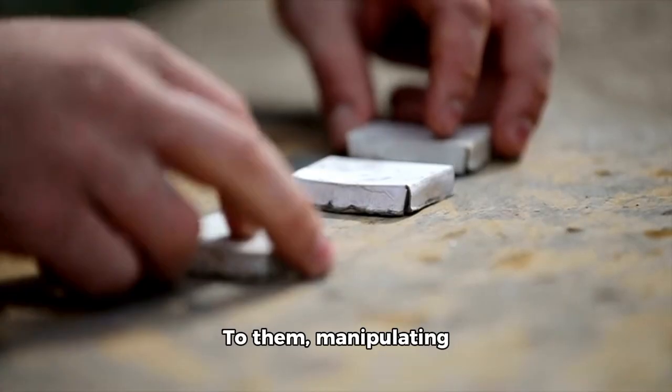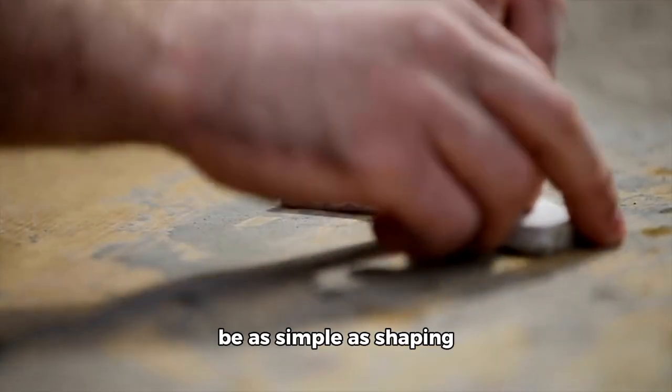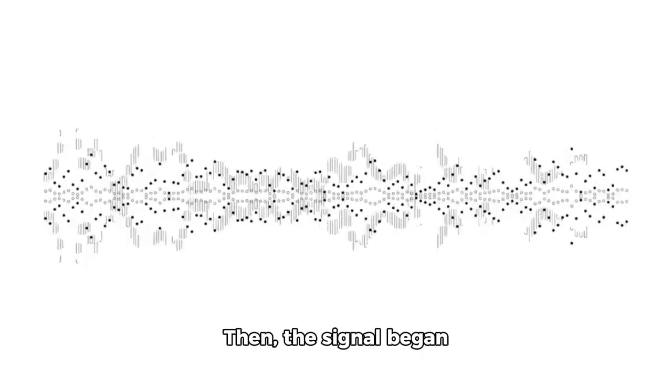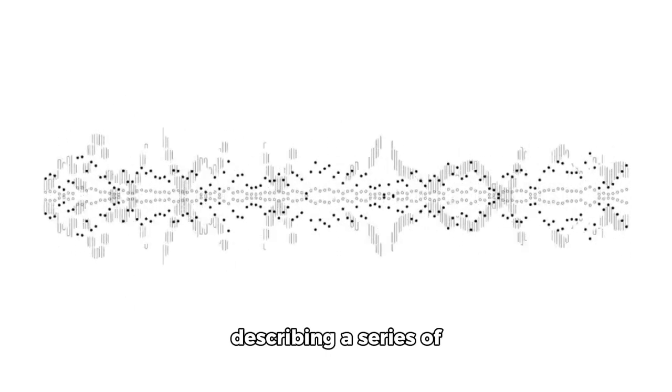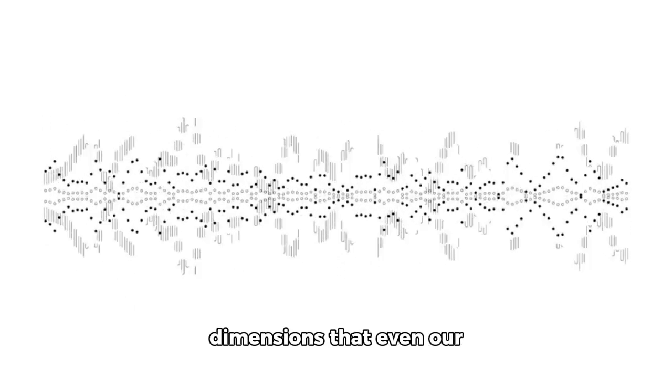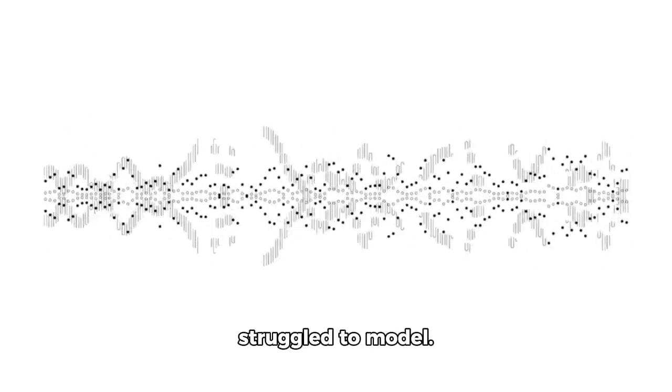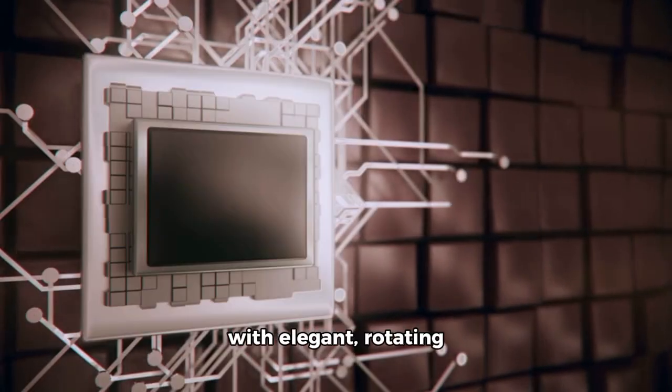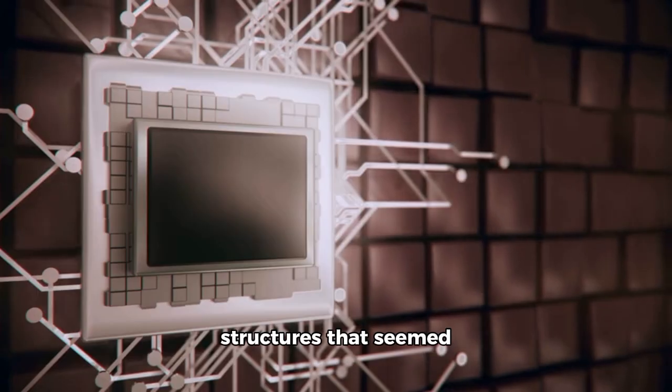Knowing this number with such precision implied a complete mastery over the universe's forces. To them, manipulating electromagnetism might be as simple as shaping clay is to us. Then, the signal began describing a series of geometric relationships, patterns in multiple dimensions that even our best supercomputers struggled to model. The screens filled with elegant, rotating structures that seemed to defy logic, existing in 11 dimensions at once.